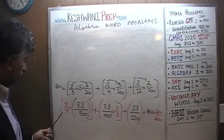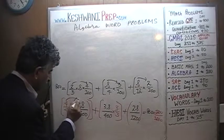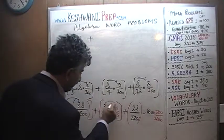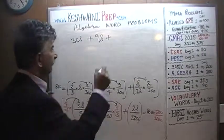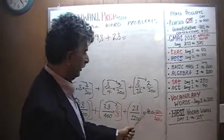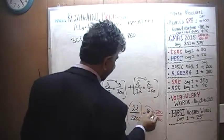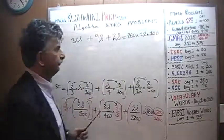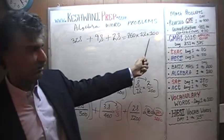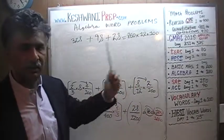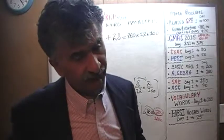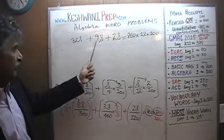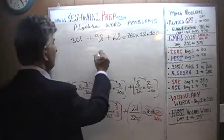Very simple. In the numerator: 4 times 8 is 32, so we have 32S. Plus 3 times 3 is 9, giving 9S. Plus 2S. So: 32 plus 9 is 41, plus 2 is 43. We have 43S on the left side.